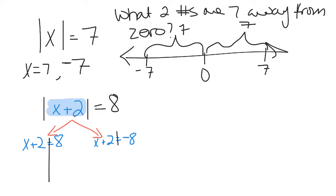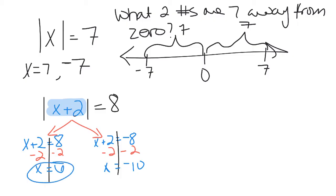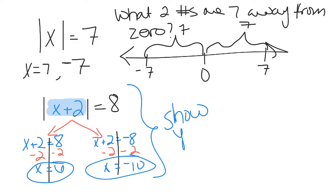We subtract 2 from both sides of the first equation, getting x = 6. Then we subtract 2 from both sides of the second equation, getting x = negative 10. So the two final answers are 6 and negative 10. This is the type of work you need to show — writing what you're adding or subtracting to each side.